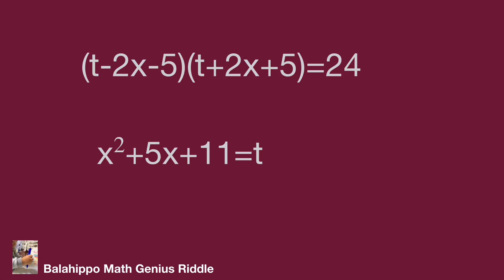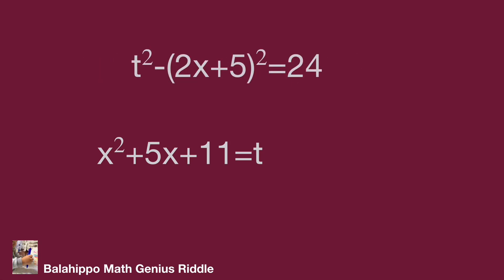This is the pattern for the difference of squares: quantity a minus b times quantity a plus b equals a squared minus b squared. So it becomes t squared minus quantity 2x plus 5 squared, equal to 24.